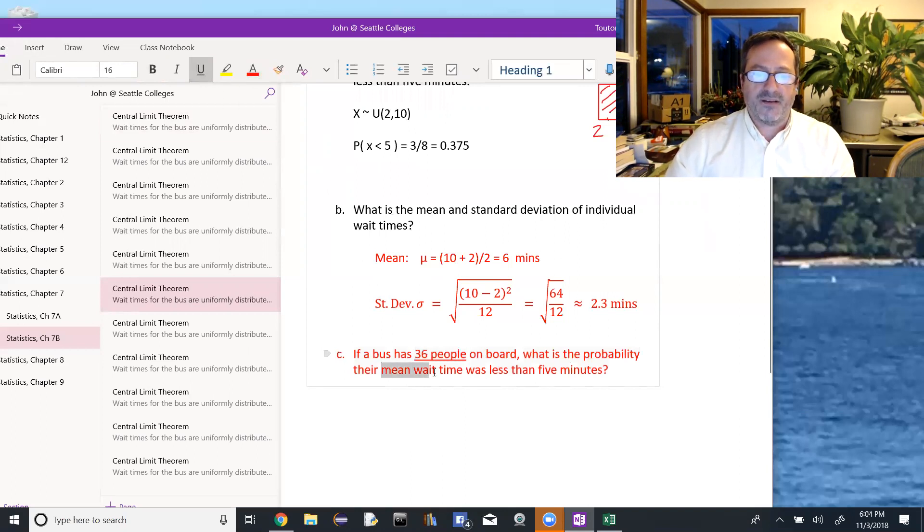And we're asking about the probability of their mean wait time, not just one person's wait time, but the average wait time for all 36 of these people. And that's what tells us we need to use the central limit theorem.